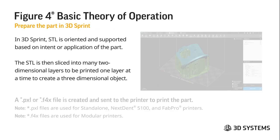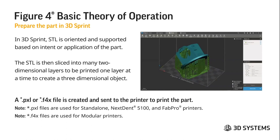Once you put that part into 3D Sprint, the STL is oriented and supported based on the intent or application of the part. You can see it's printed in such a way that we can get flat bottom surfaces in the orientation shown. Detail is in the upper direction so there are no supports on that part — it is self-supporting — and we can get an accurate area with holes set up such that there's minimal cleaning or post-processing to get a smooth surface to insert the tubing.